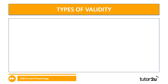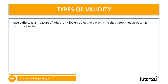Let's run through the different types of validity. Face validity — think about it: it generally looks like it does what it's supposed to do. The 'face' part is like, on the face of it, this tool looks like it measures what it's supposed to measure.